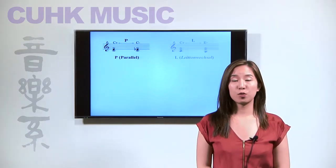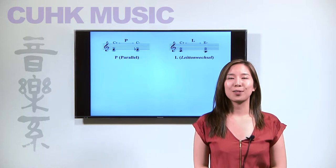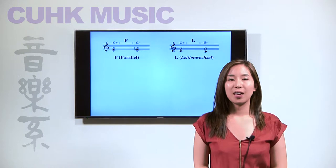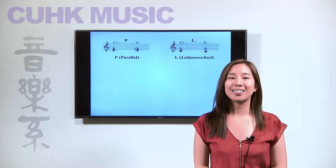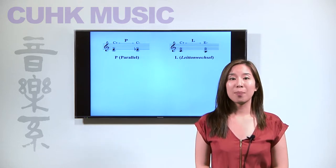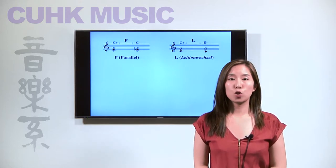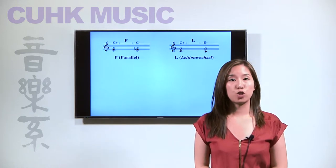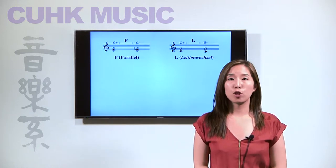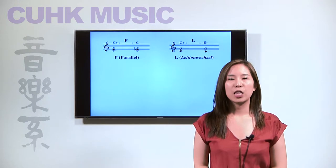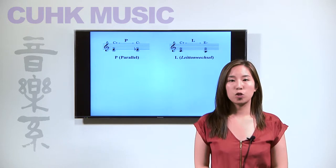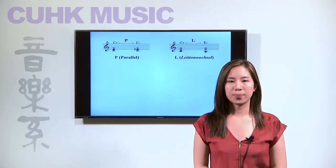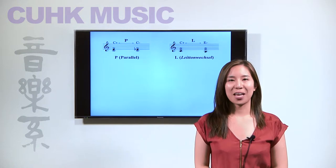The second transformation is called L, Leitonwechsel, which is German for leading tone exchange. Let me explain this transformation with an example. Take a C major triad and an E minor triad. These two chords share the notes E and G, which are a minor third apart. The remaining voice shifts semitonally from the note C to the leading tone B. This process is known as L.